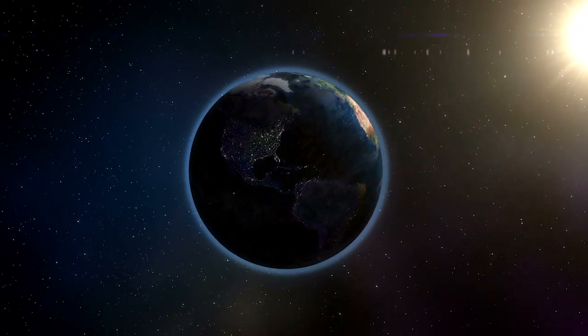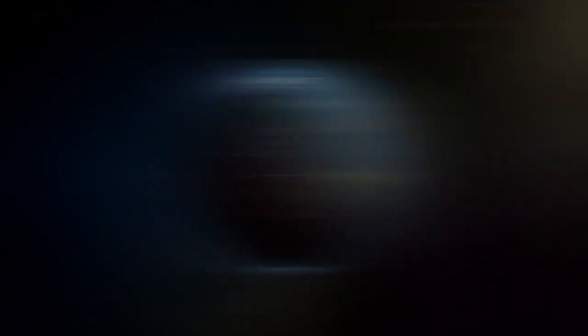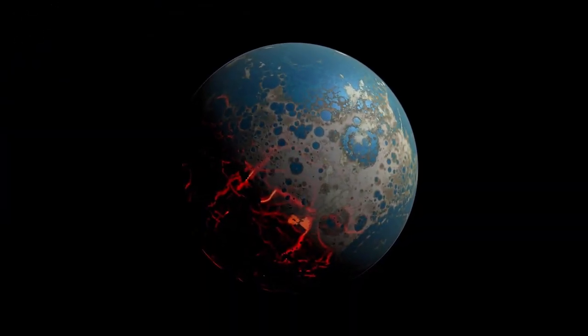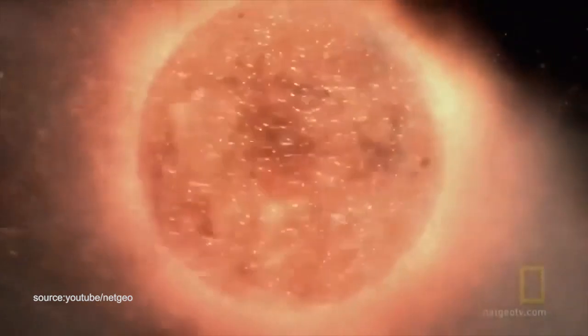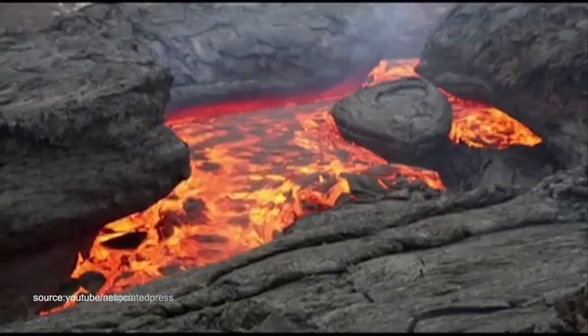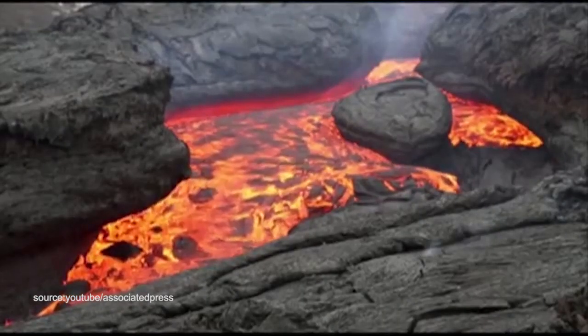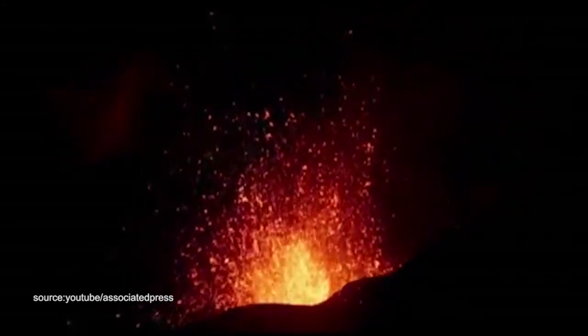It's generally accepted that early on in Earth's infancy, the planet was completely inhospitable. It was a hellish landscape, full of fire and volcanic eruptions and lava flowing everywhere. There's a reason we refer to that time as the Hadean era, because Earth was essentially run by Hades.